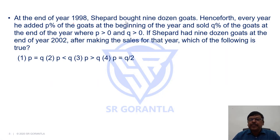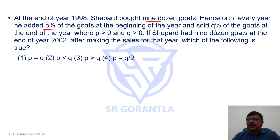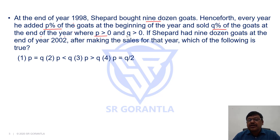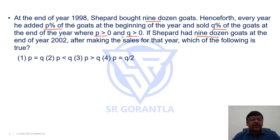At the end of the year 1998, Shepard bought 9 dozen goods. Henceforth, every year, he added P percent of the goods at the beginning of the year and sold Q percent of the goods at the end of the year, where P is greater than zero and Q is greater than zero. If Shepard had 9 dozen goods at the end of year 2002, after making the sales for that year, which of the following is true?